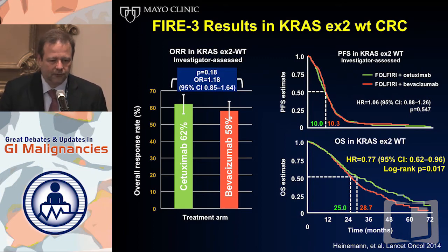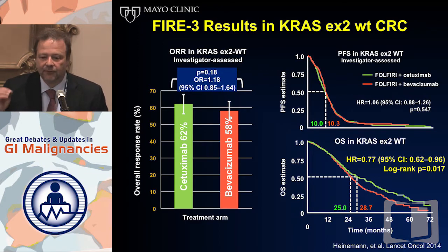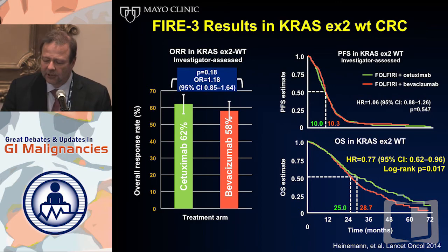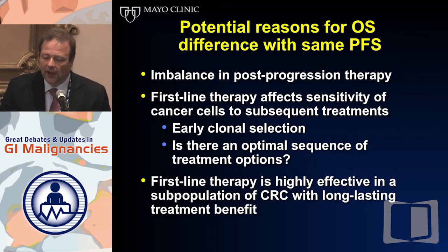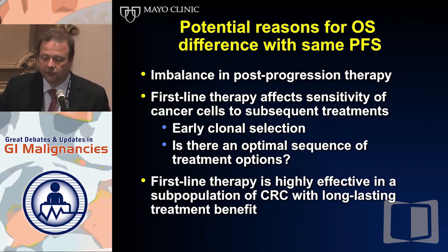The initial intent-to-treat analysis did not show a difference in overall response rate — the primary endpoint — nor a difference in progression-free survival. But there was this unexpected yet very intriguing finding of a difference in overall survival, and the difference was not trivial: in the initial analysis, a median difference of 3.7 months with a hazard ratio of 0.77. We knew then we could eliminate certain patients further — the RAS-mutated tumors — and we needed more follow-up. The question was why there was a difference in overall survival without a PFS difference.